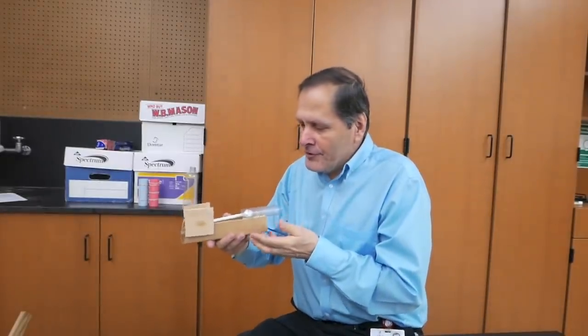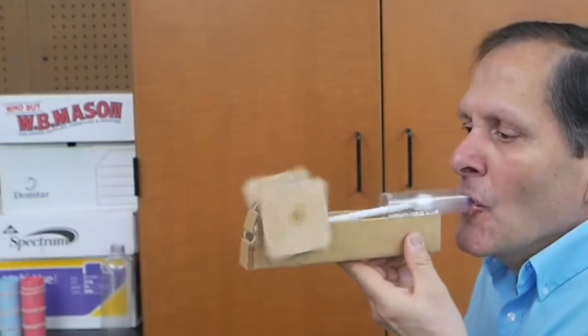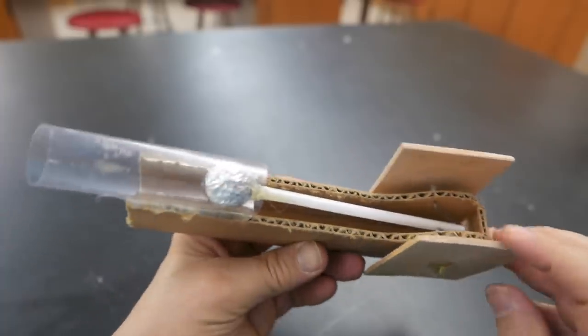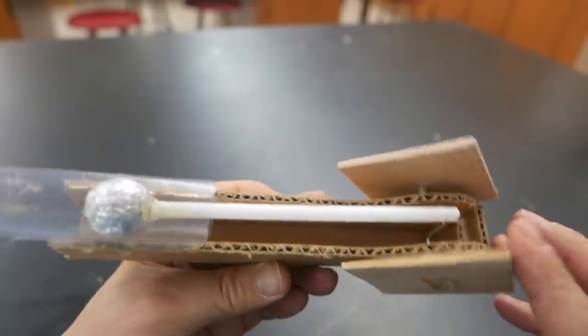Now here's my smallest version. This piece was made from a plastic tube that had candy in it and the piston is a ball that was made out of paper and aluminum foil.